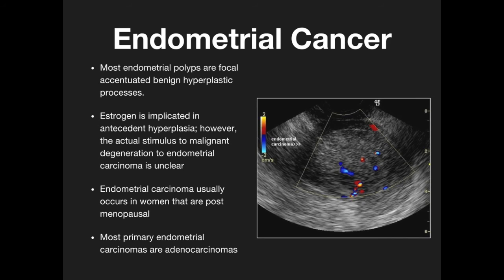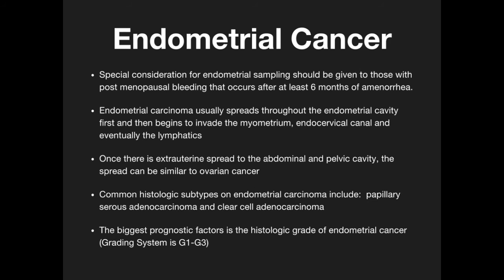Endometrial carcinoma usually occurs in postmenopausal women. Most primary endometrial carcinomas are adenocarcinomas. Special considerations for endometrial sampling should be given to those with postmenopausal bleeding occurring after at least 6 months of amenorrhea. Endometrial carcinoma spreads through the endometrial cavity, invades the myometrium and endometrial canal, and eventually enters the lymphatics. Once there is extra-uterine spread, it can spread through the abdominal and pelvic cavity similarly to ovarian cancer. Common histological subtypes include papillary and serous adenocarcinoma with clear cell adenocarcinoma. The biggest prognostic factor is the histologic grade, graded G1 to G3.